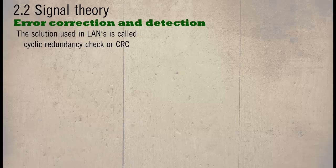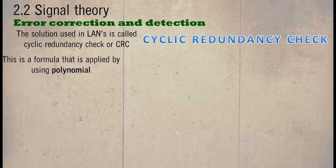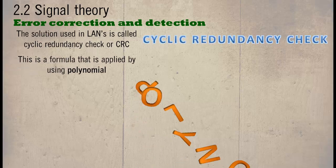The solution used in LANs is called Cyclic Redundancy Check or CRC. This is a formula that is applied using polynomial.